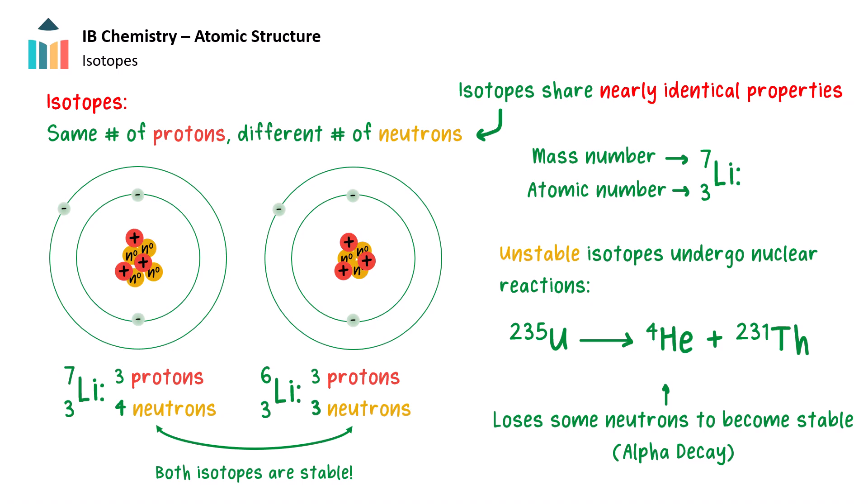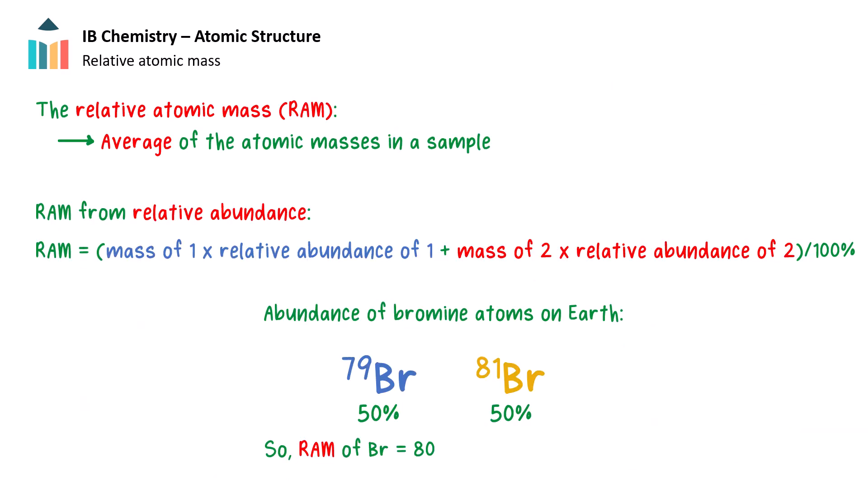Some isotopes are unstable. Unstable nuclei undergo nuclear reactions to produce nuclei with more stable arrangements of neutrons and protons, and this usually changes the element. Real samples of an element often contain a range of isotopes, so the atoms of that element can't be said to have a single mass. For this reason, we usually take an average of the atomic masses of the atoms in the sample. This is the Relative Atomic Mass, or RAM.